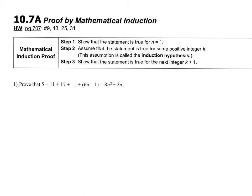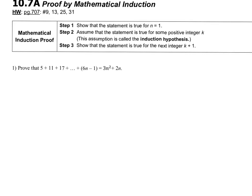10.7 is about proof by induction. There are three steps to this process shown in the box. Let's do number one following these three steps.